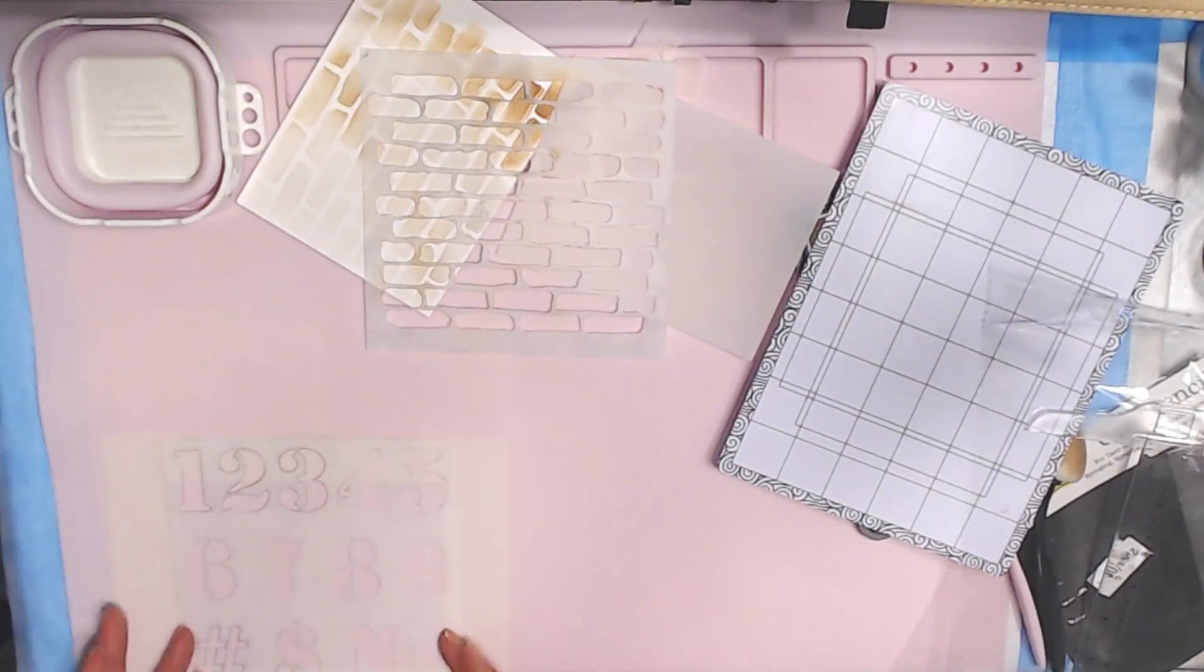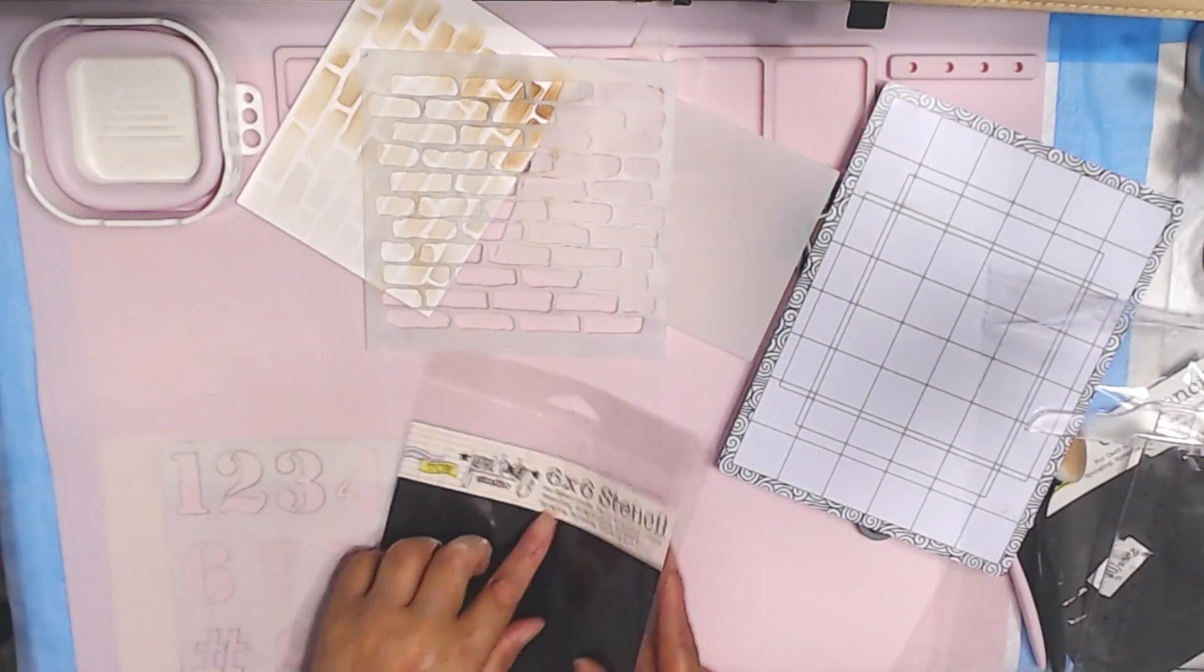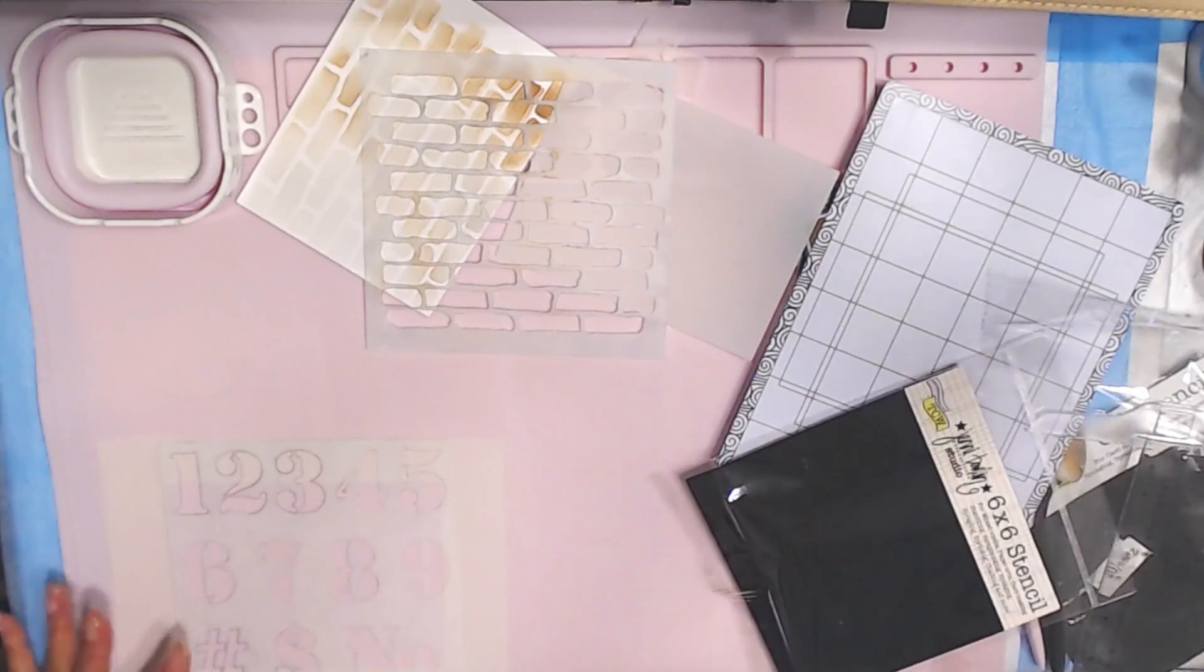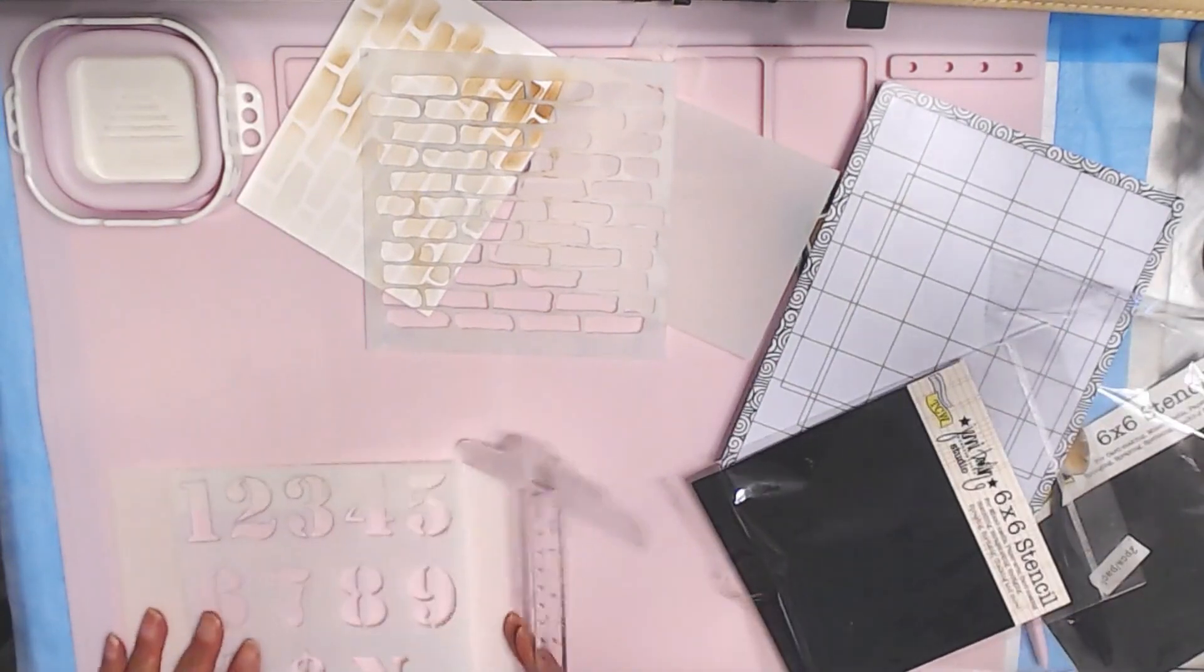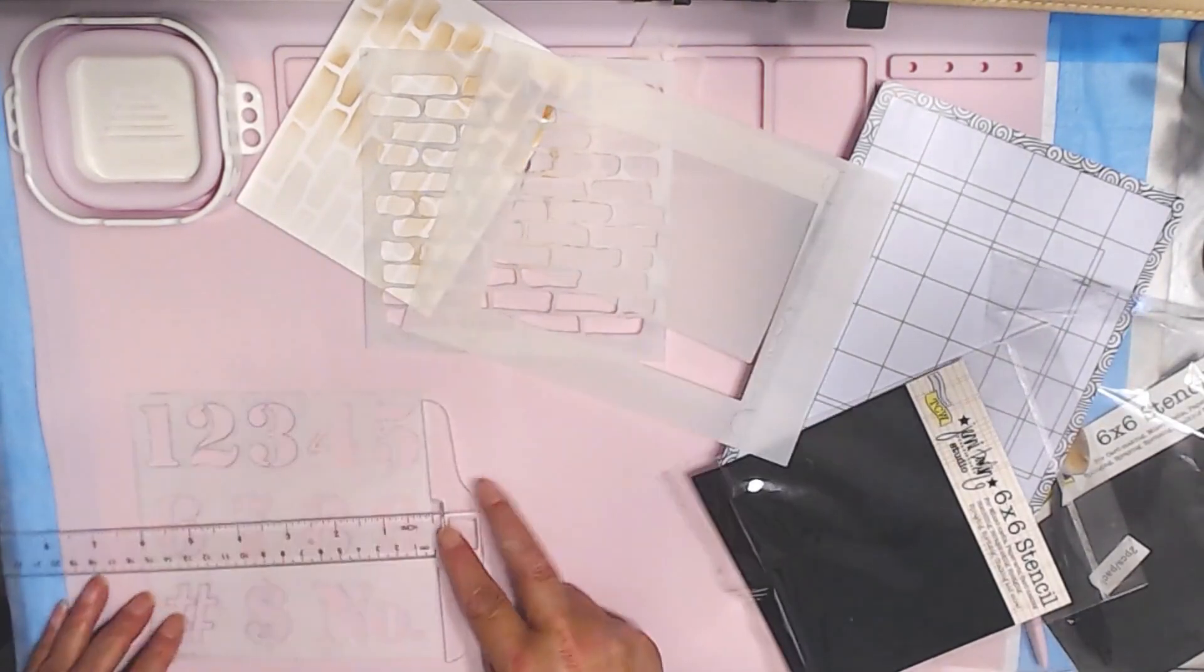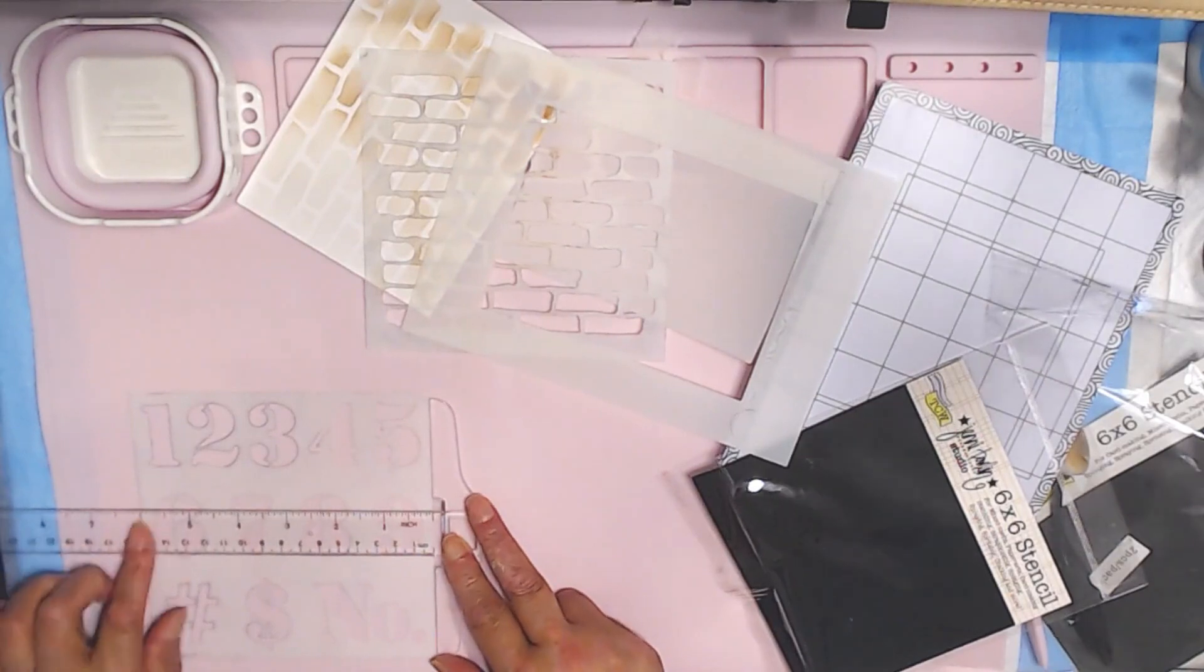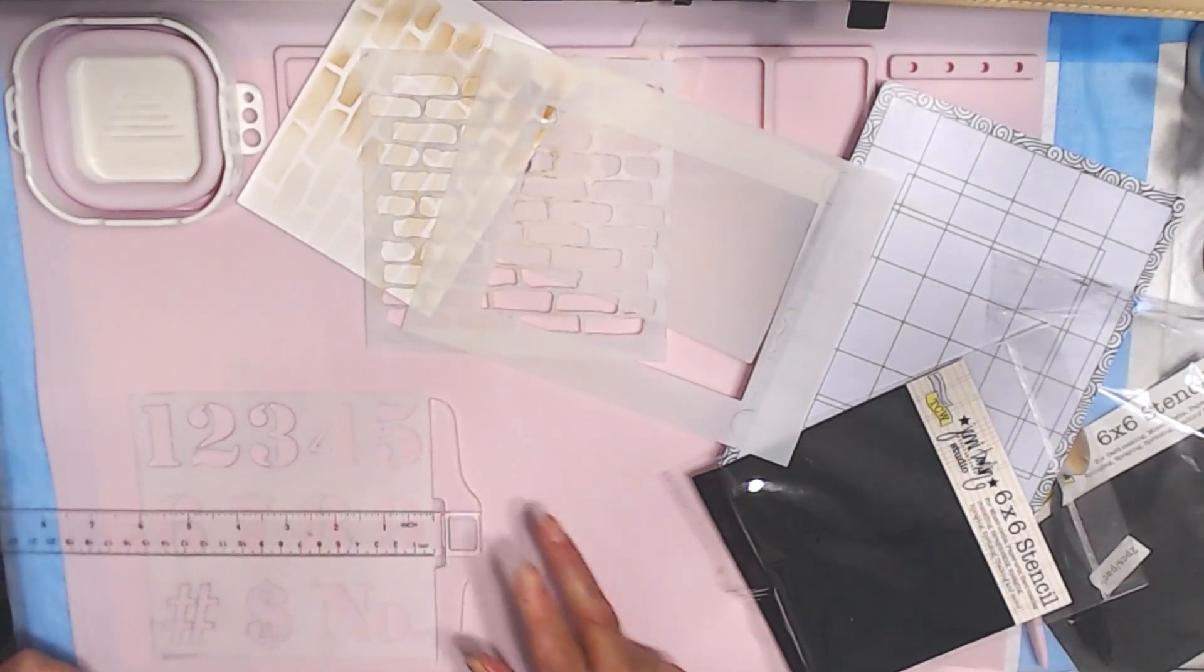And this is a 6x6, so this is a square stencil. And it is a 6x6 stencil, and I measured it with my T-square. I measured my stencil just to be sure, and it is dead on 6x6.